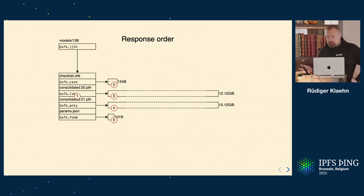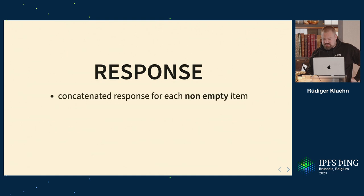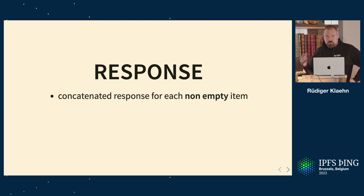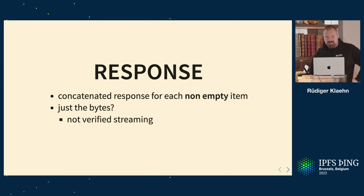The response is just the data you requested in a certain order — naturally the collection first, then all elements in the order they appear. It's the concatenated response for each non-empty item. If an item is empty you don't need to send anything — the requester knows what they requested. You can only make sense of the response if you are the requester and know the request. That's fine because in a request-response protocol you can assume the requester knows what they requested. Just sending bytes would not be verified streaming — you'd have to download everything and then hash it, and only then find out you downloaded the wrong thing. That's exactly where BAU comes in.